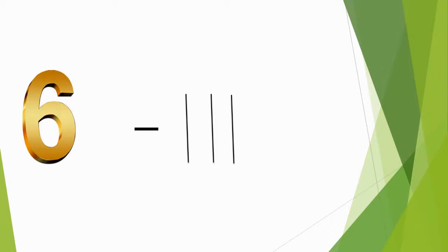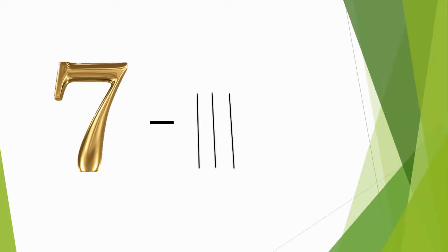Number 6 is represented by four standing lines and one slant line — making a group of five — and then one additional standing line. Number 7 is represented by a group of five (four standing lines and one slant line) and two additional standing lines.